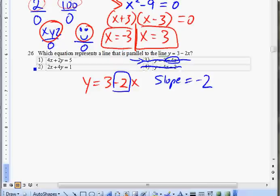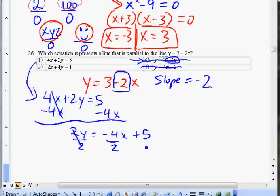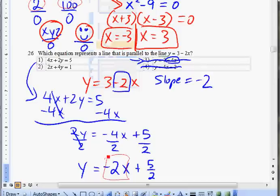Now there's two of them left. Choice one, let's put in standard form: 4x plus 2y equals 5. I want to get y by itself, so subtract 4x on both sides. You have 2y equals negative 4x plus 5. Now divide by 2. Negative 4 divided by 2 is negative 2x plus 5 over 2, and this equals y. Choice one just happens to have negative 2 as their slope, the number in front of x.